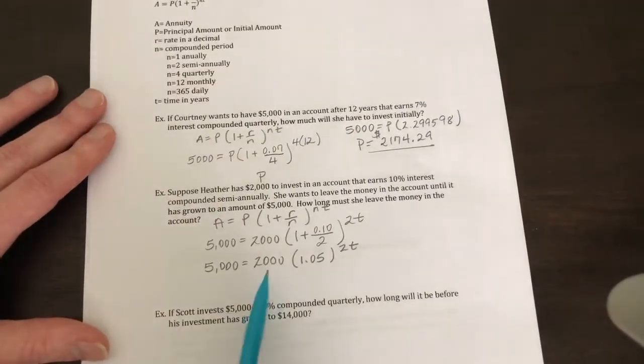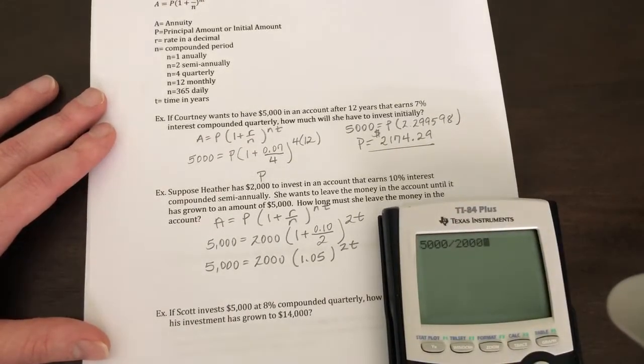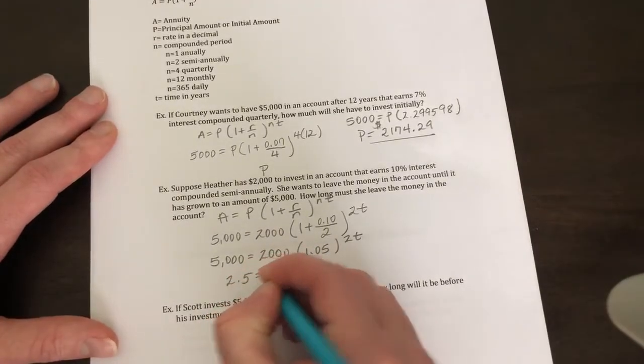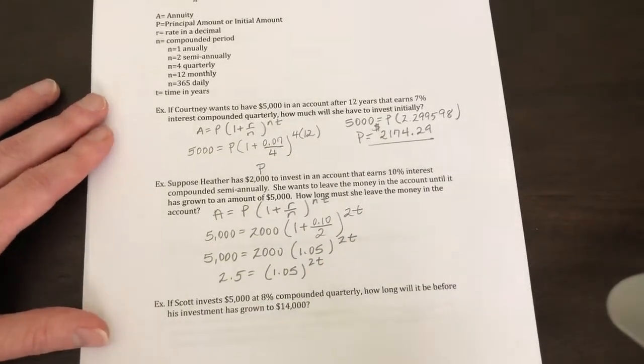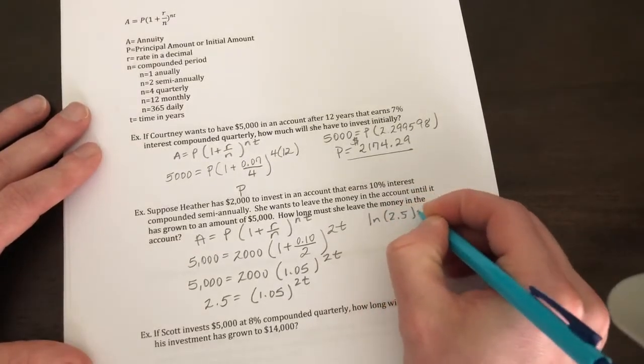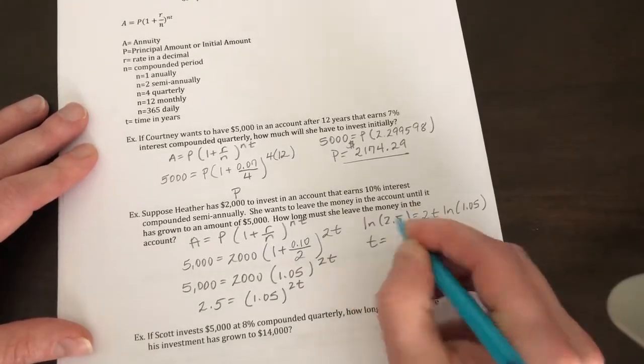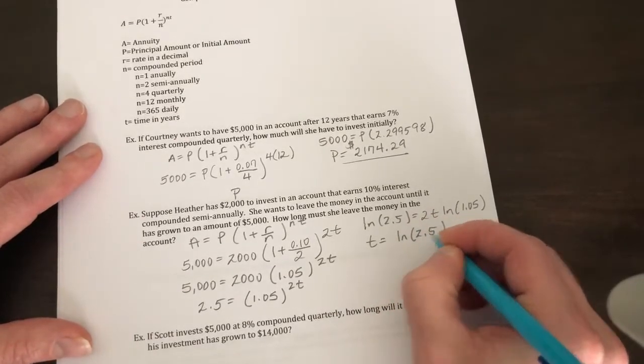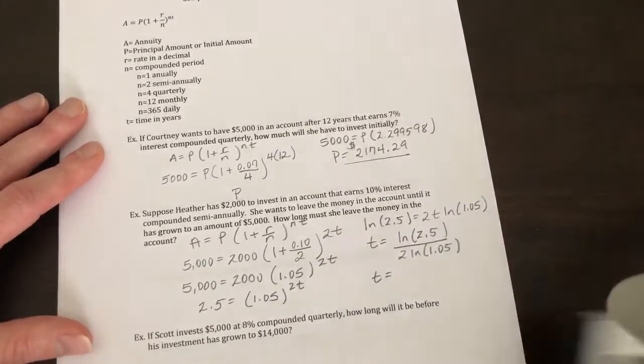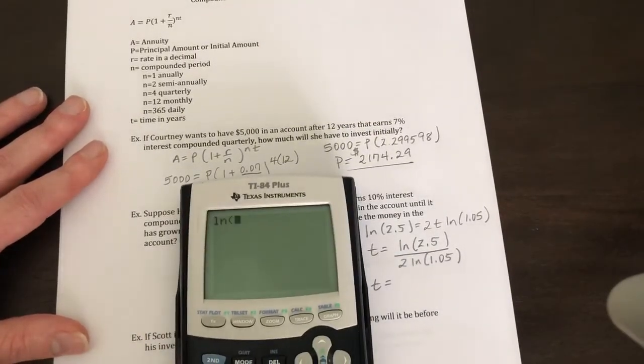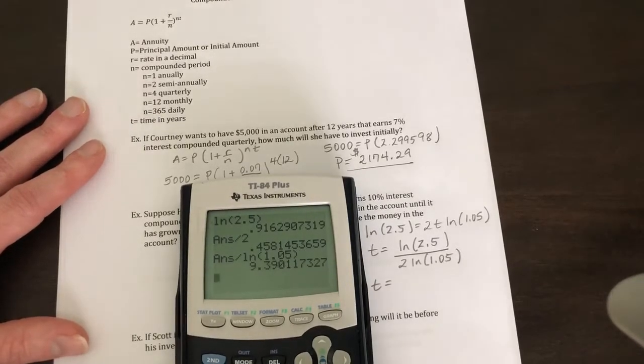Our first step, just like we did before, is to divide by 2,000. So 5,000 divided by 2,000 is 2.5. Anytime I'm trying to solve for an exponent, I'm going to natural log both sides. So ln(2.5) = 2t × ln(1.05). When I solve for t, my answer looks like this: ln(2.5) divided by 2 ln(1.05). So we get ln(2.5) divided by 2 divided by ln(1.05), and you should get 9.39 years.